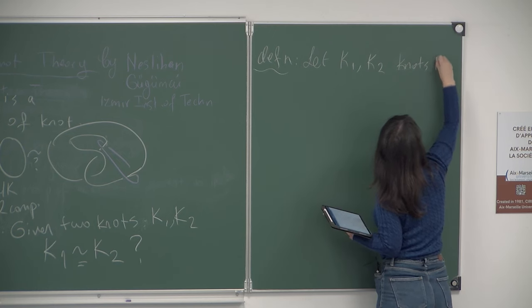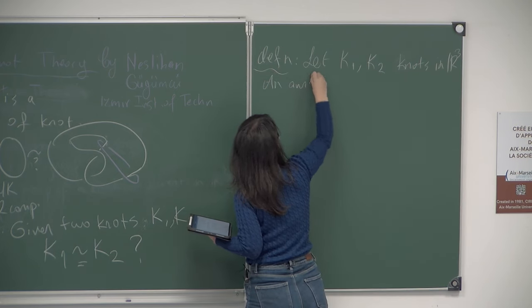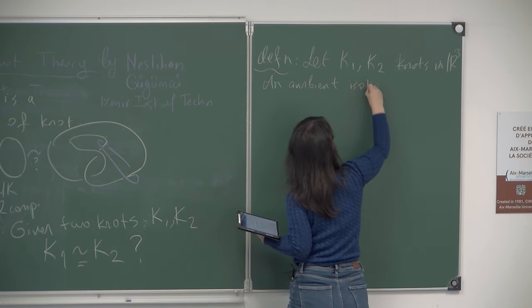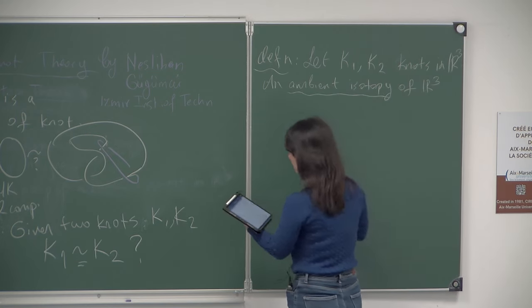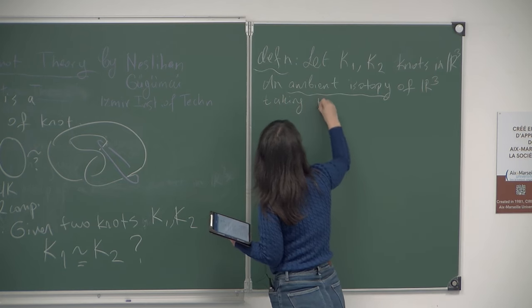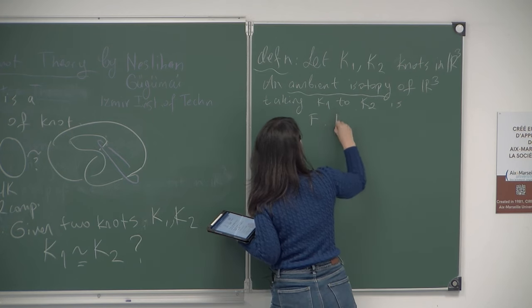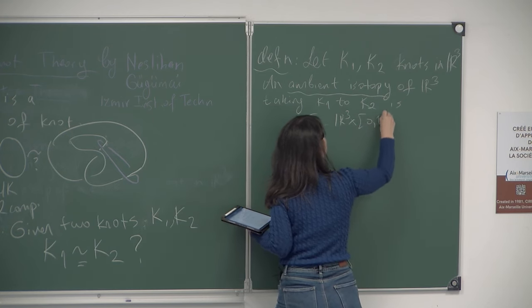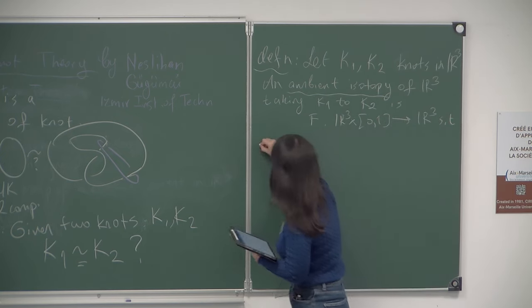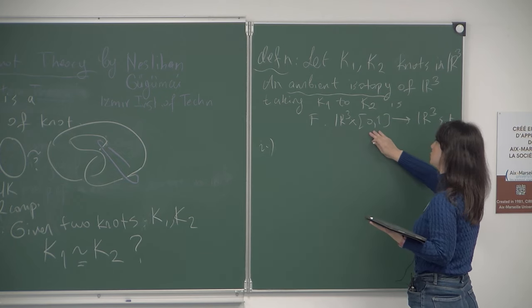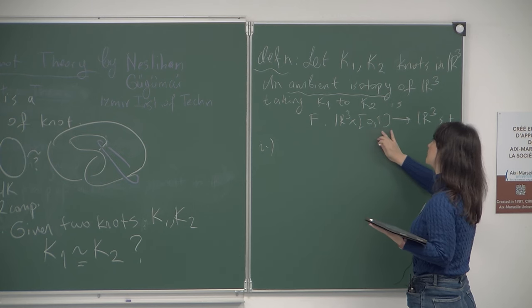To study the main problems of knot theory, we need to define the equivalence relation. The ambient isotopy of R³ taking k₁ to k₂ is a function from R³ × [0,1] to R³ such that at every time instance t, the function Fₜ is a diffeomorphism of three-dimensional space, at the initial time F₀ is the identity function, and at the terminal time it sends k₁ to k₂.